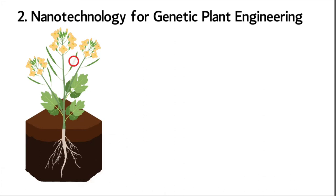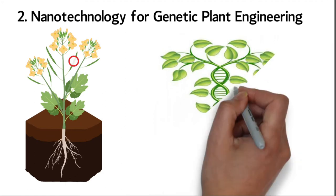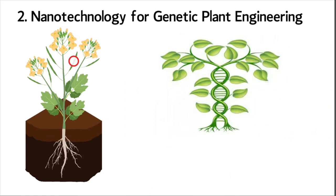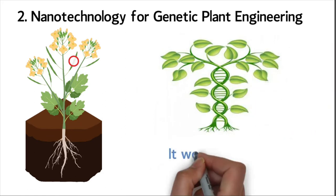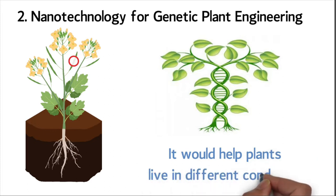Nanotechnology for Genetic Plant Engineering. Scientists have made flowers and plants stronger by using genetic reprogramming. They have done this so the plants can be resistant to things that hurt them. Bits of DNA from plants with good traits could make plants more productive. It would help plants live in different conditions.